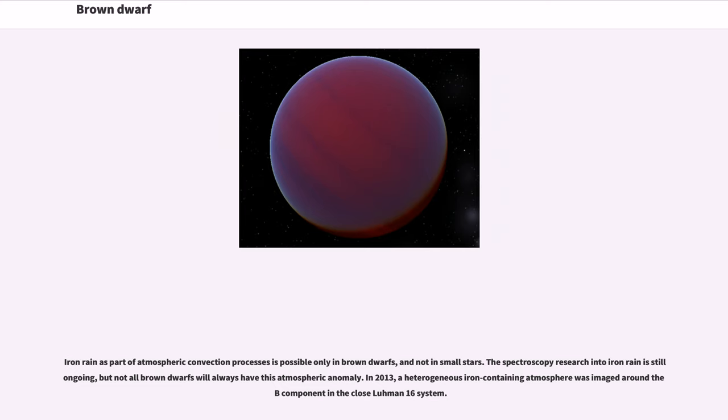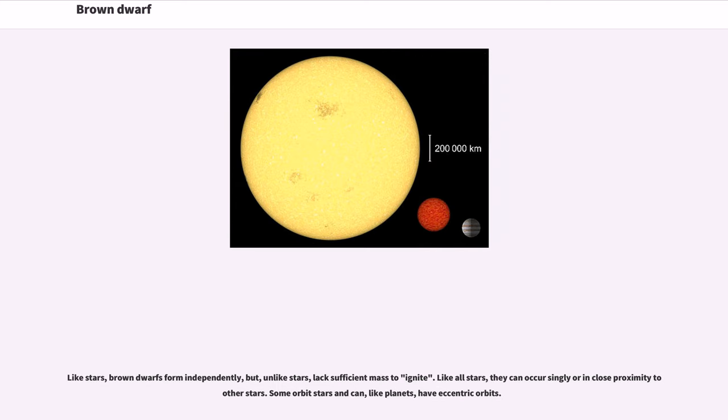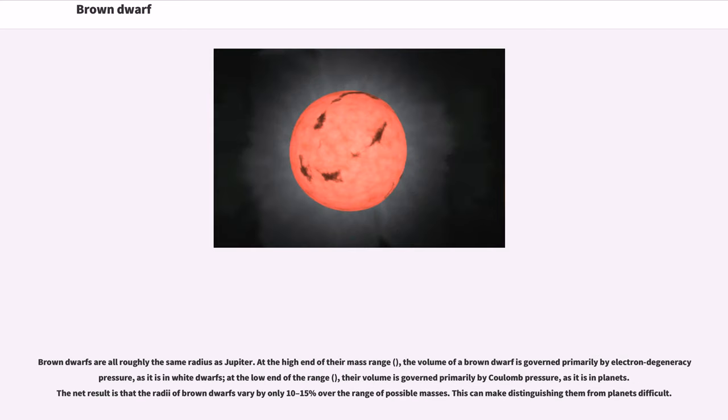Like stars, brown dwarfs form independently, but unlike stars, lack sufficient mass to ignite. Like all stars, they can occur singly or in close proximity to other stars. Some orbit stars and can, like planets, have eccentric orbits. Brown dwarfs are all roughly the same radius as Jupiter. At the high end of their mass range, their volume is governed primarily by Coulomb pressure, as it is in planets. The net result is that the radii of brown dwarfs vary by only 10 to 15% over the range of possible masses. This can make distinguishing them from planets difficult.